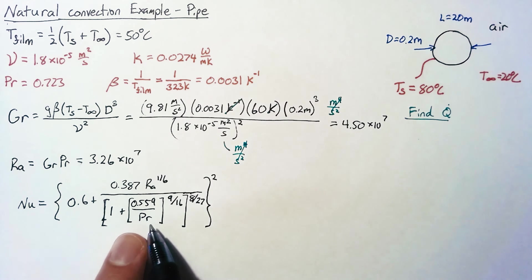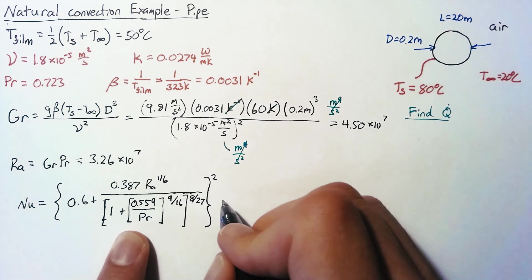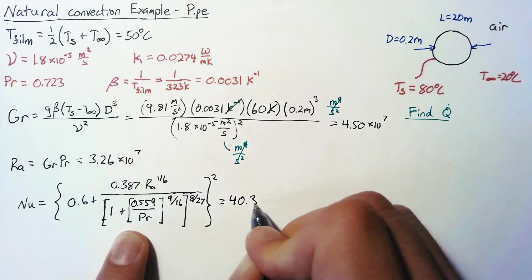Then we can close the entire bracket and everything we just wrote is going to be squared. So that's a lot, but we really only need to plug in our Prandtl number and our Rayleigh number to this equation. And we're going to end up with 40.3.